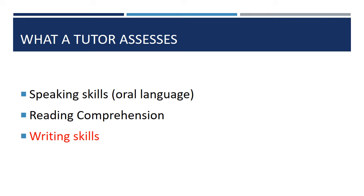As a tutor, you will assess many different skill areas when you meet your student. Depending on their needs, goals, and level, you might focus on one more than others, but generally the main areas are: speaking skills or oral language, reading comprehension, and writing skills — how they can compose sentences or greater passages using the conventions and rules of English. Since speaking skills will be covered in the in-person orientation and reading comprehension was covered in the previous section, we'll focus now on assessing writing skills.